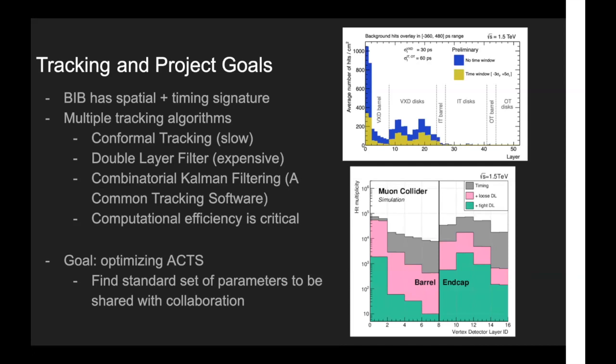So the BIB, or beam induced background, has a particular spatial and timing signature that allows for good handles for discrimination. So for example, by using cuts on timing alone, the hit density can be reduced by a factor of two, and that's what's shown in this top figure above. And then for analyzing the spatial background, there are multiple different tracking algorithms that are being considered.